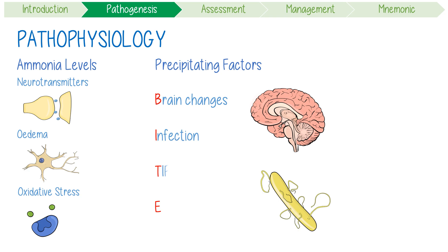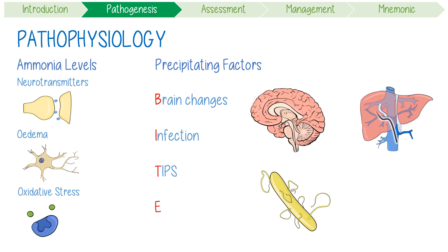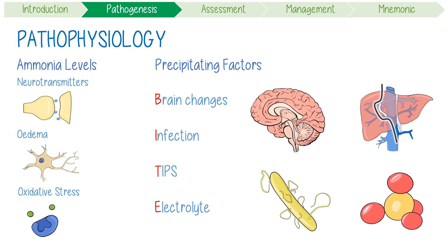T stands for a TIPS procedure, or transjugular intrahepatic portosystemic shunt. This is because shunting blood around the liver limits the metabolic filtering process it usually provides. Finally, E stands for electrolyte derangements, like hypokalemia.